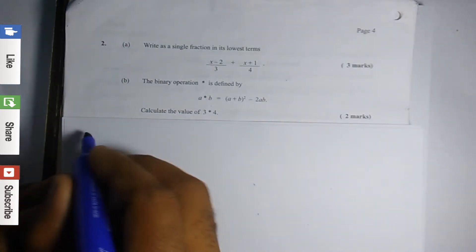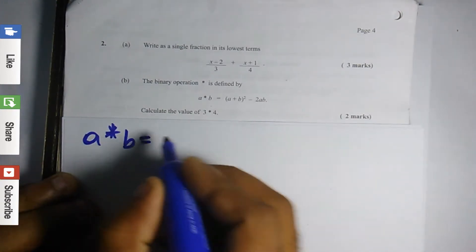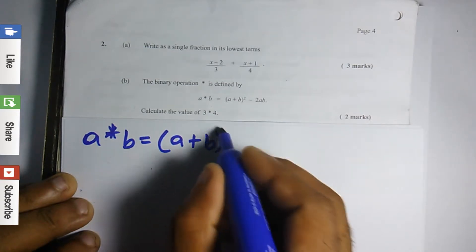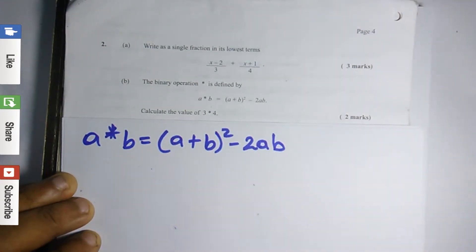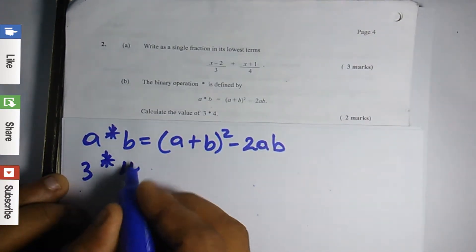So let's get into the question. This is a star b equals a plus b all squared minus 2ab. Now the idea is to calculate 3 star 4.